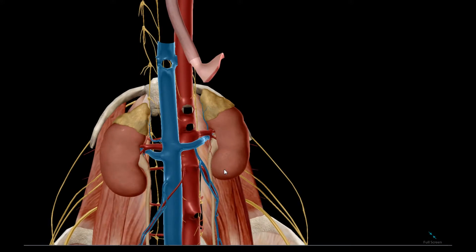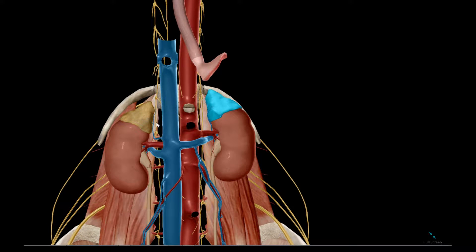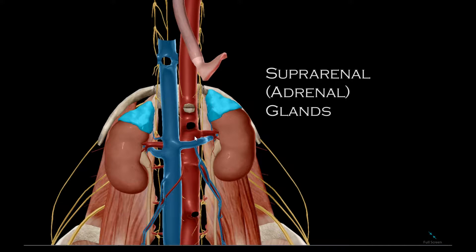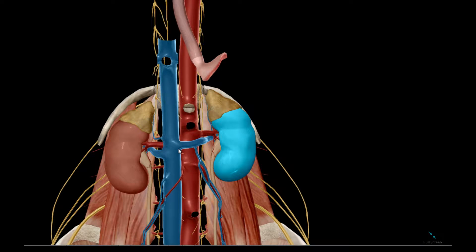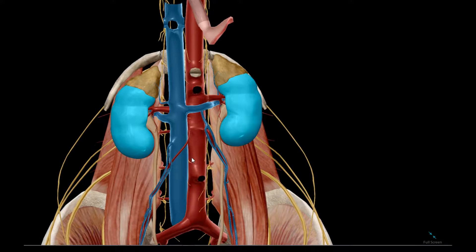The organs shown here are the suprarenal or adrenal glands, and these organs here are the right and left kidneys.